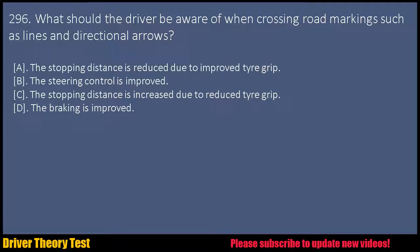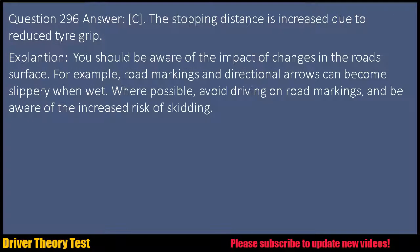Question 296: What should the driver be aware of when crossing road markings such as lines and directional arrows? a. The stopping distance is reduced due to improved tire grip. b. The steering control is improved. c. The stopping distance is increased due to reduced tire grip. d. The braking is improved. Question 296 Answer: C. The stopping distance is increased due to reduced tire grip.